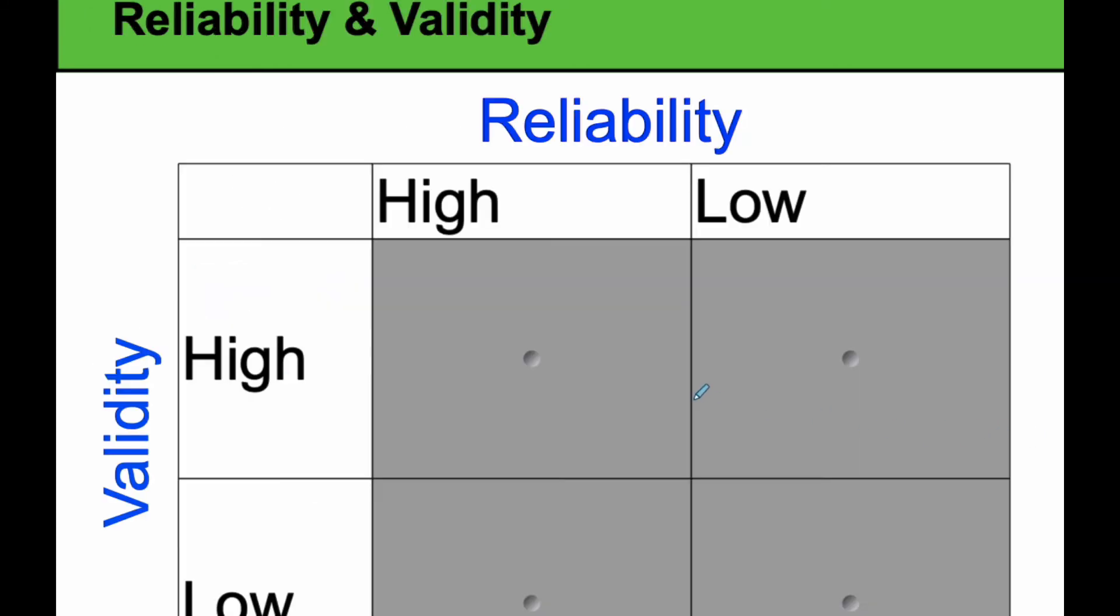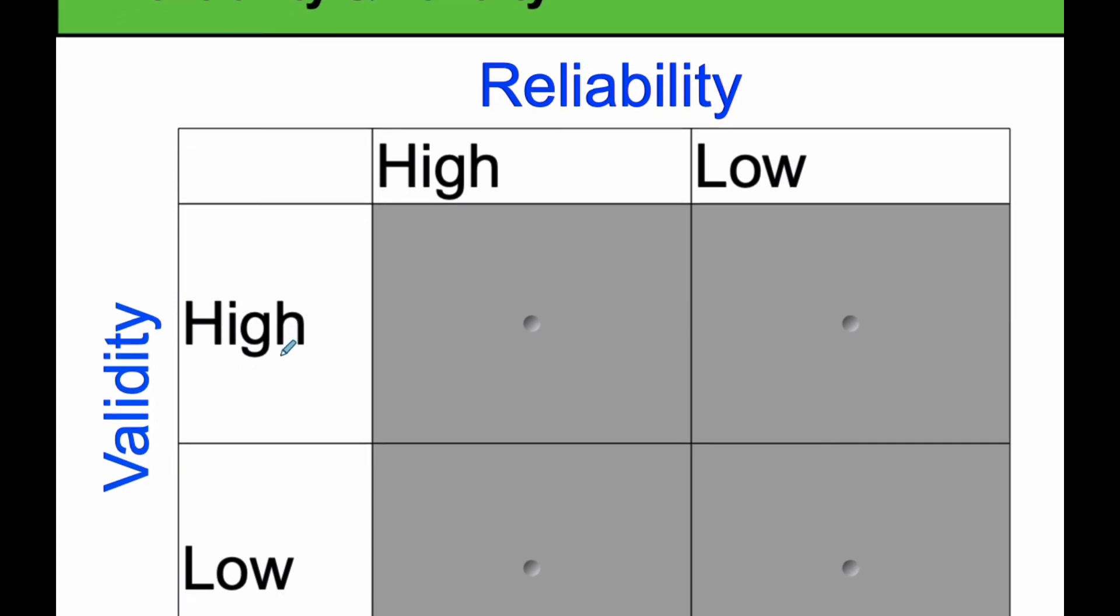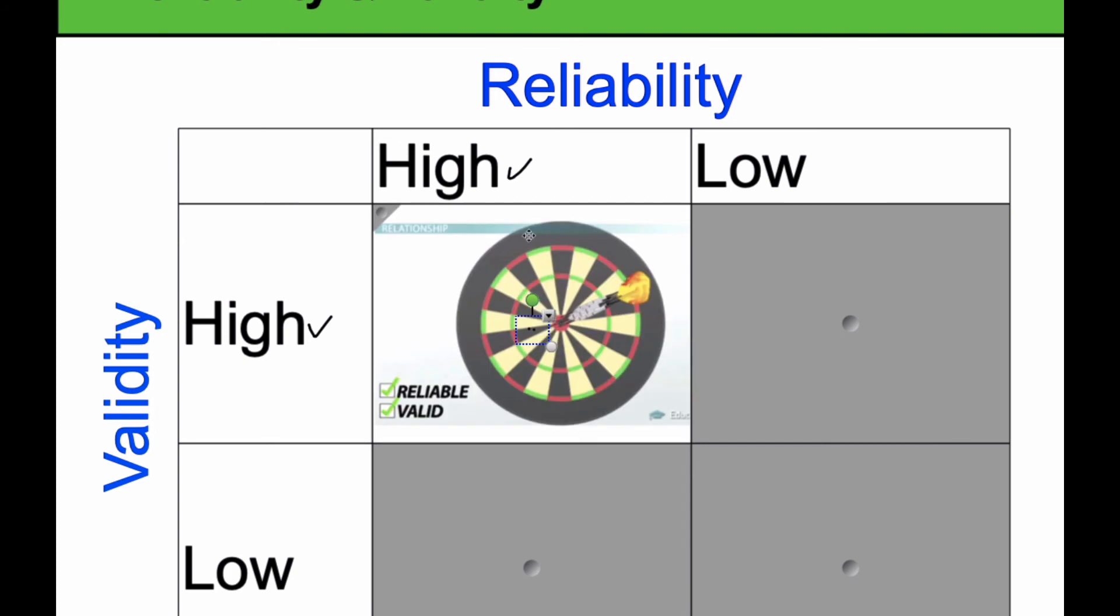Let's put this all together. Validity and reliability are different, but they're definitely related. What we always want to do is we want high reliability and high validity. If we do that, consider a dartboard. If we are able to do that, what happens with our dartboard is we come along. If we try and get the center, we are able to consistently hit the target, and we're always hitting the target consistently.